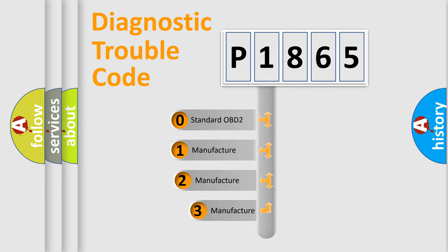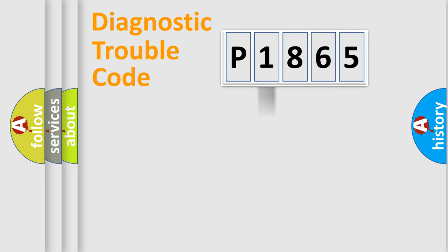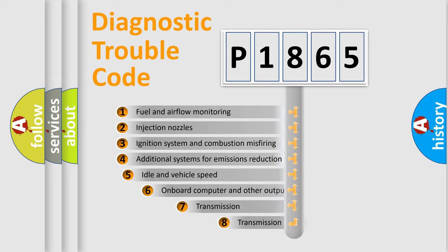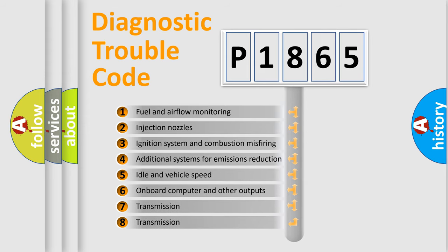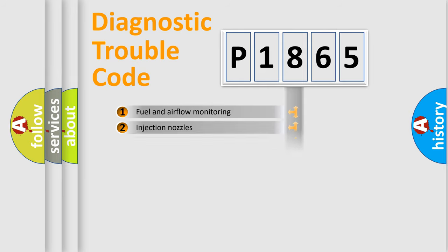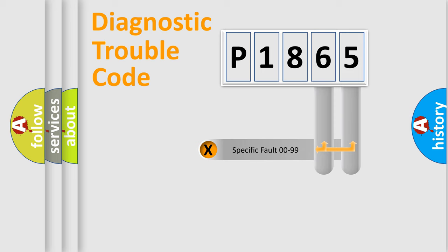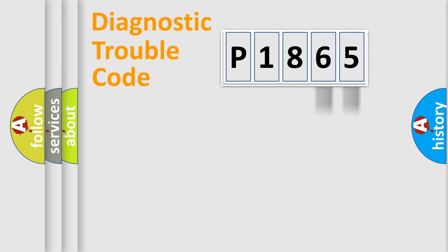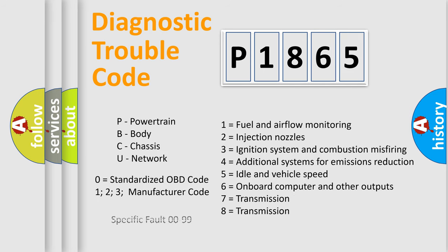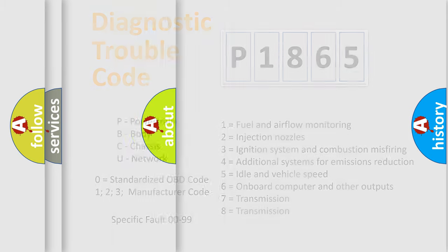If the second character is expressed as zero, it is a standardized error. In the case of numbers 1, 2, or 3, it is a more specific expression of a car-specific error. The third character specifies a subset of errors. This division is valid only for the standardized DTC code, where only the last two characters define the specific fault of the group. Such a division is valid only if the second character code is expressed by the number zero.